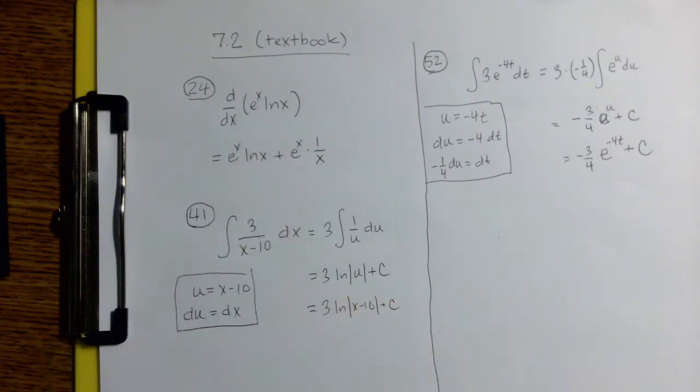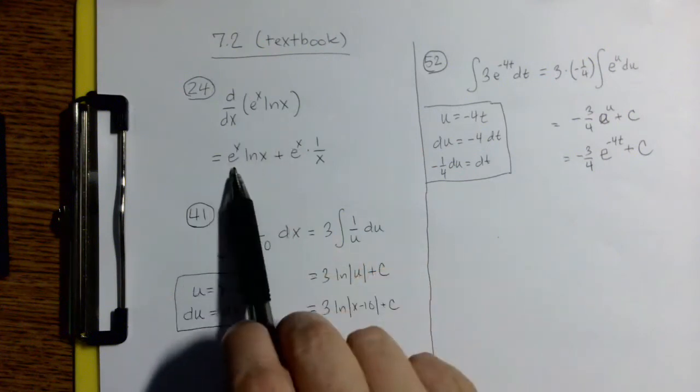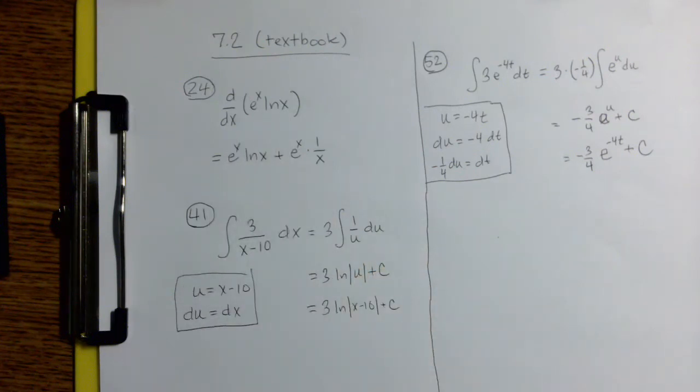If the derivative of e to the x is itself, you can't get any easier than that in terms of remembering a derivative rule, and the derivative of the natural log of x is 1 over x. So taking those two rules in combination with the product rule gives us that derivative.